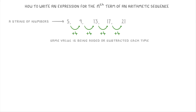So if we look at this sequence here: 1, 5, 9, 13, 17, and 21. It counts as an arithmetic sequence because it's increasing by 4 each time.